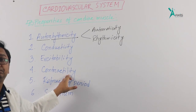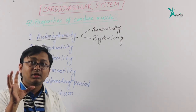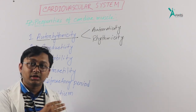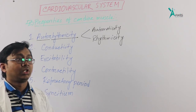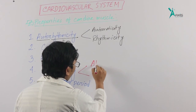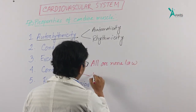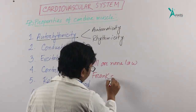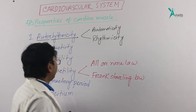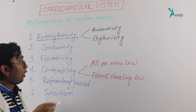Then, contractility — as the name says, the cardiac tissue contracts. That is a property of cardiac muscle. The relevant laws here are the All-or-None law and the Frank-Starling law.